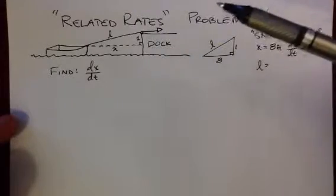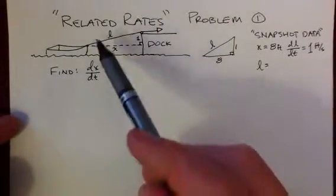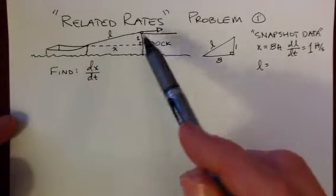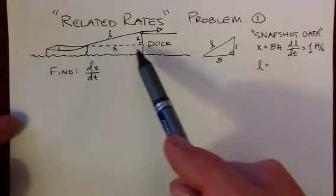Classic related rates problem where we've got a boat that's being pulled towards a dock. This is a chance to see a changing hypotenuse. Usually we've got things in x and y directions that are changing.